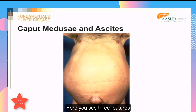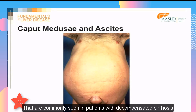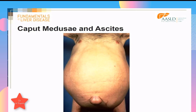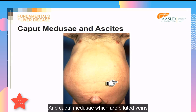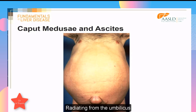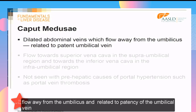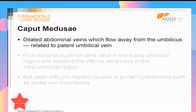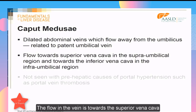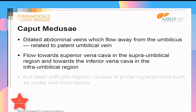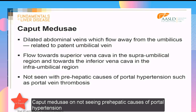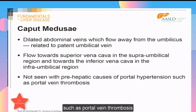Three features commonly seen in patients with decompensated cirrhosis are tense ascites, an umbilical hernia, and caput medusae, which are dilated veins radiating from the umbilicus. These dilated veins flow away from the umbilicus and are related to patency of the umbilical vein. Flow is towards the superior vena cava in the supra-umbilical region and towards the inferior vena cava in the infra-umbilical region. Caput medusae are not seen with pre-hepatic causes of portal hypertension, such as portal vein thrombosis.